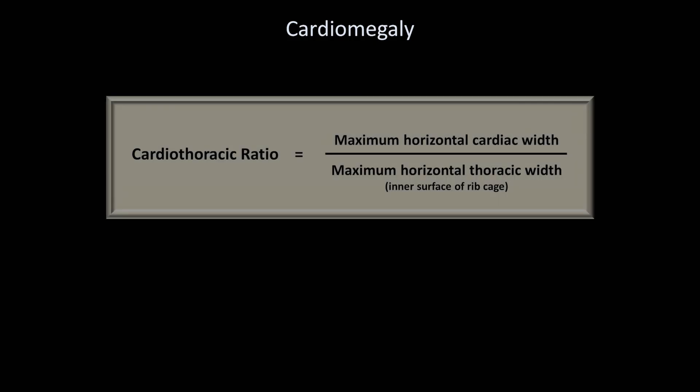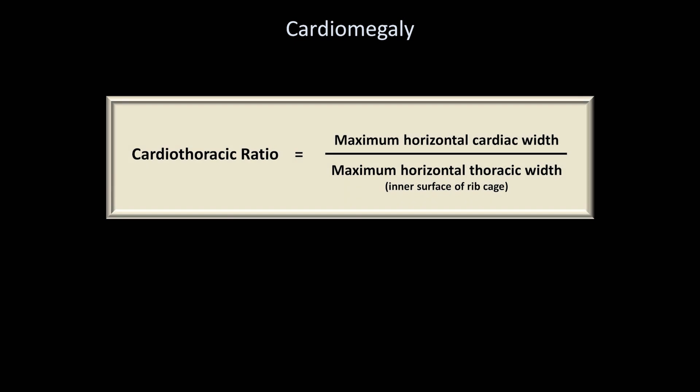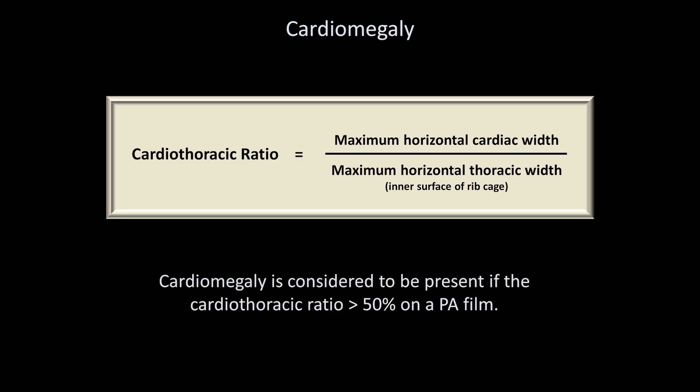I'll now talk about some specific abnormalities of the cardiac silhouette. The most common abnormal finding is cardiomegaly, which simply means that the overall size of the heart is larger than normal. By far the most common way to define it uses the cardiothoracic ratio — the maximum horizontal cardiac width divided by the maximum horizontal thoracic width as measured between the inner surfaces of the rib cage. Cardiomegaly is said to be present if this ratio exceeds 50% on the PA film.